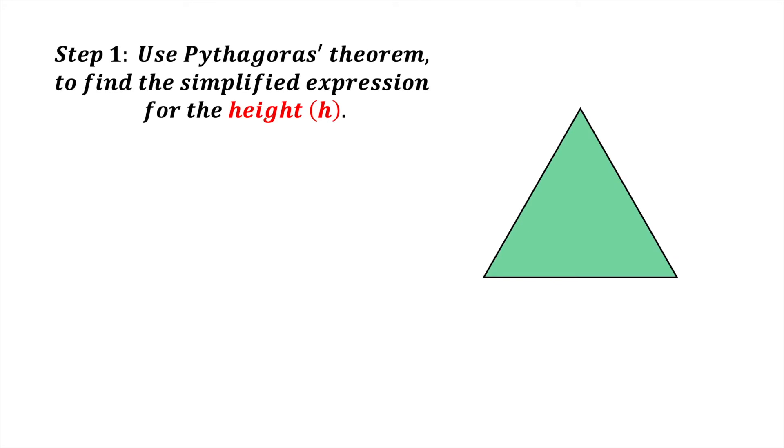Step 1: Use Pythagoras' theorem to find the simplified expression for the height h. You're probably thinking, how can we use Pythagoras' theorem since it only relates to right-angled triangles and here we have an equilateral triangle? By splitting the equilateral triangle in half from the base to the apex, we create two right-angled triangles.